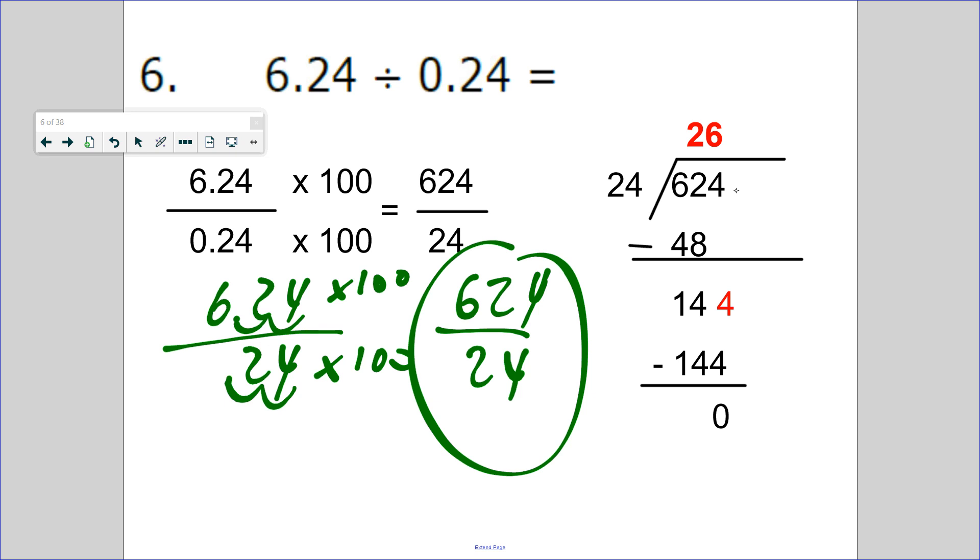Is this just a regular division problem? Yes. 624 divided by 24. I'll write out the multiples: 24, 48, 72, 96, 120, 144. So using this, you can see how I divided it.